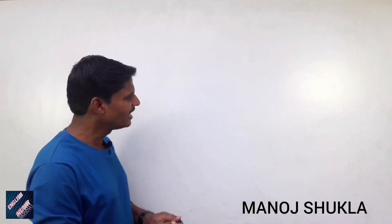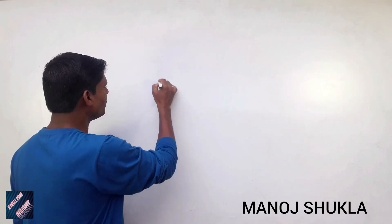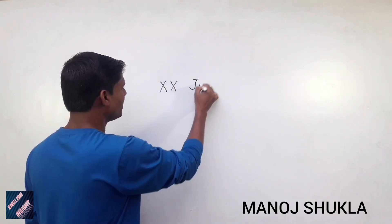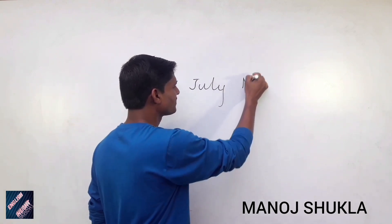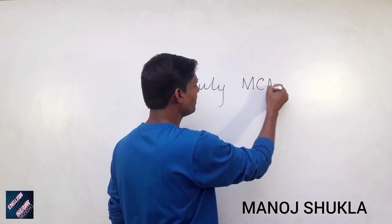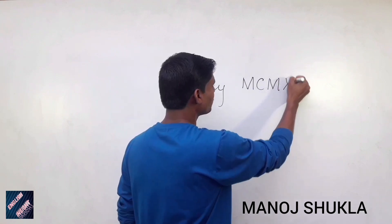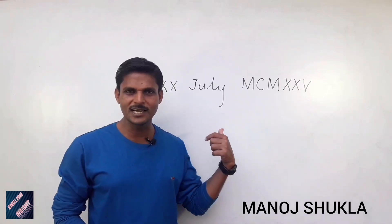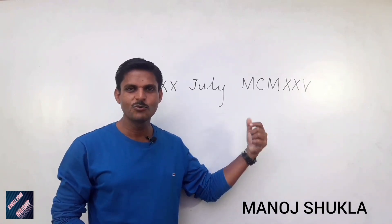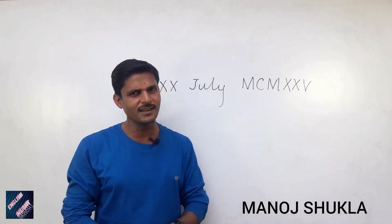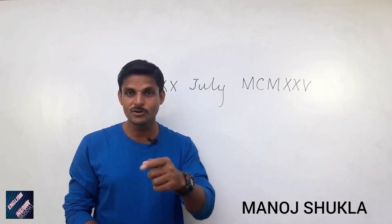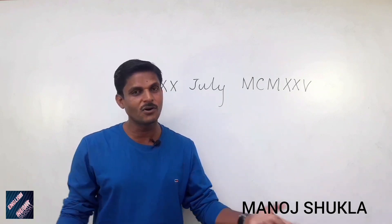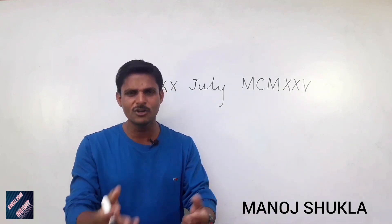I am writing my date of birth in Roman numerals. My date of birth is XX July, M, CM, XX, V. This is my date of birth. But can you guess what it means? Can you write in English my date of birth or your date of birth? If you can't, just see how we can easily remember all these up to 1000, all these Roman numerals.